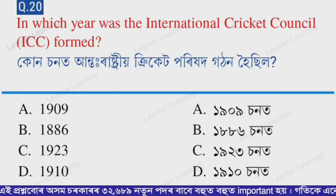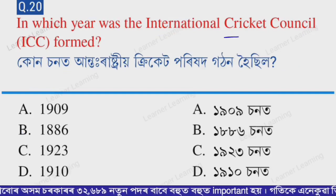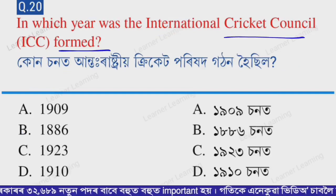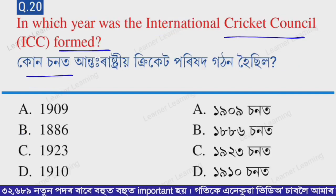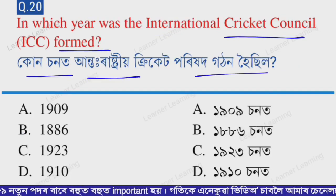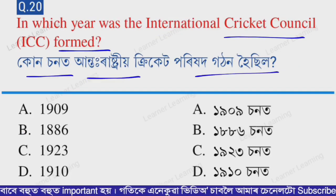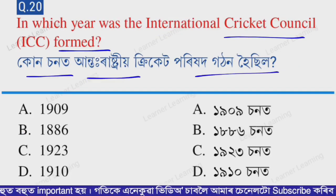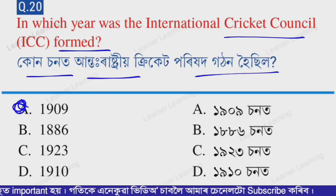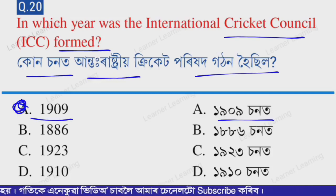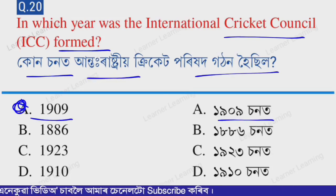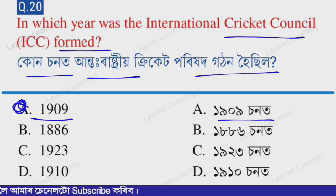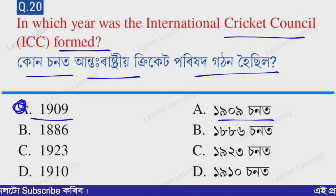Next question: in which year was the International Cricket Council formed? The correct option is option A — 1909. The International Cricket Council was formed in 1909.